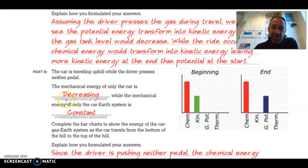But the mechanical energy is decreasing. So if you're traveling uphill and the driver presses neither pedal, the mechanical energy of the car is decreasing, while the mechanical energy of only the car Earth system is constant. So if it's only the car, now the force of gravity is external, and so the car itself is feeling an external force that's getting worked upon negatively by gravity, and so its mechanical energy is going to go down. But if you define the system including the Earth, now that's going to be a constant.